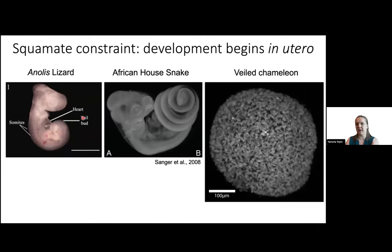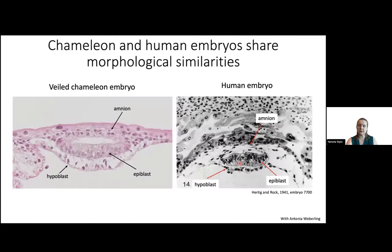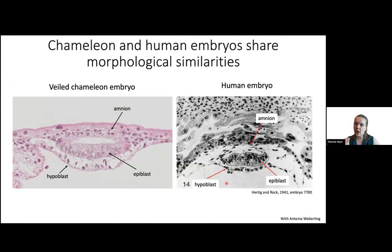That's why we're so excited about veiled chameleon embryos: at the time they lay their eggs, the embryo is just a ball of cells, at pre-gastrulation stages of development, which means we finally have a reptile model to study all of those early processes. We also think early veiled chameleon embryos look remarkably similar to human embryos — we can recognize the amnion, the epiblast which gives rise to the embryo, and the hypoblast on the ventral side.